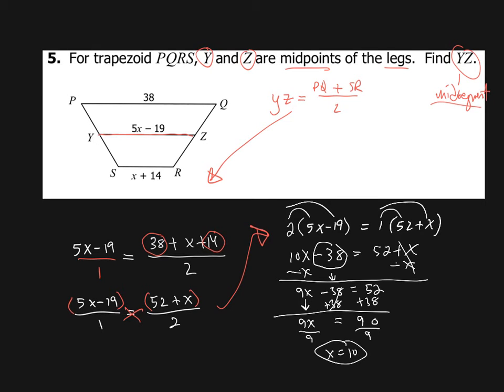Now that's not our final answer. Our final answer is the length of YZ. Now YZ is worth 5X minus 19, and X is equal to 10. So that's going to be 50 minus 19. Well, 50 minus 20 is 30, so 50 minus 19 must be 31. So YZ is equal to 31. And we are in good shape.